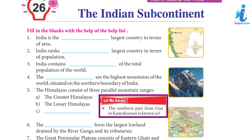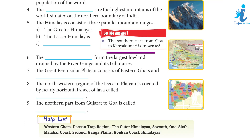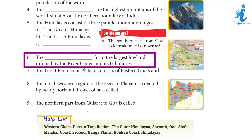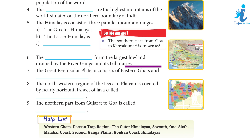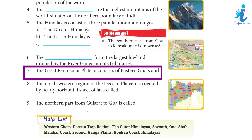The southern part from Goa to Kanyakumari is known as... 6. The Ganga Plains form the largest lowland, drained by the river Ganga and its tributaries. 7. The Great Peninsular Plateau consists of Eastern Ghats and Western Ghats.